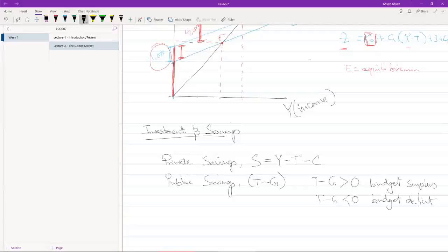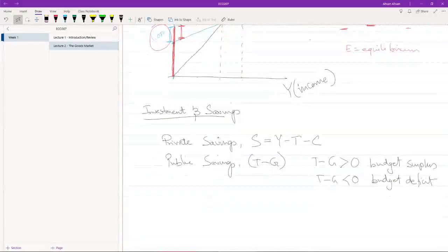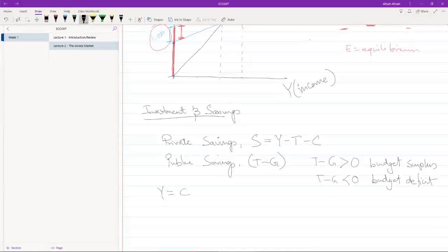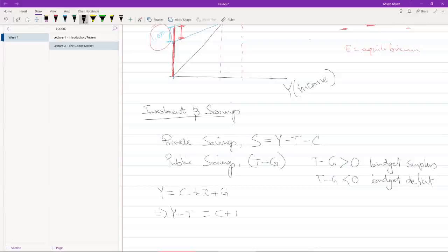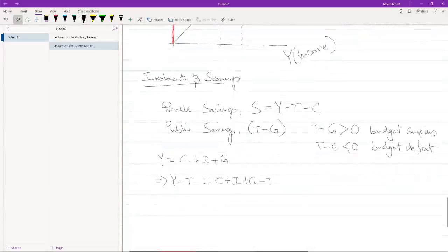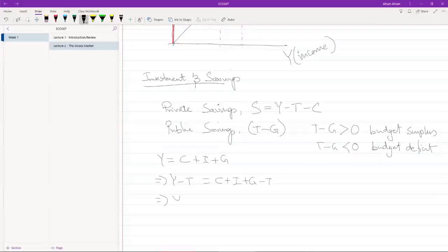Now what we have seen already is that Y is equal to C plus I plus G. Let's subtract T from both sides, so Y minus T equals C plus I plus G minus T.